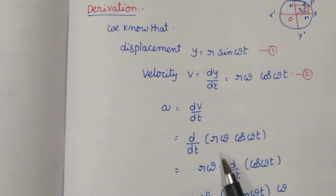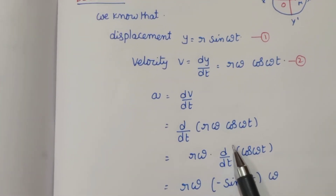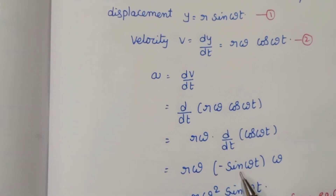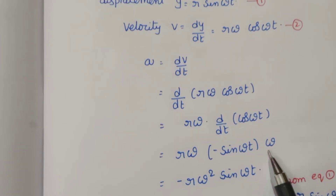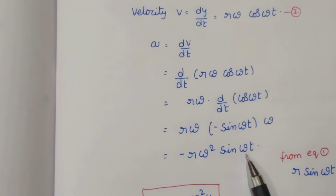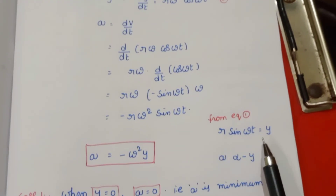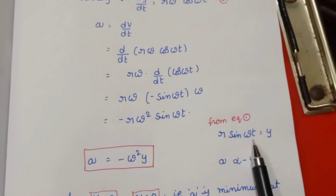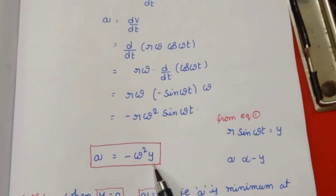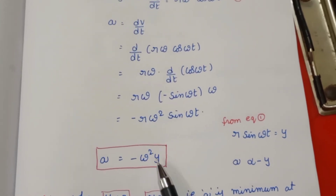Acceleration a = dv/dt = d/dt of r·ω·cos(ωt). Here r·ω is the constant value. Differentiating cos(ωt): d/dt of cos θ gives −sin θ, and differentiating ωt gives ω. So acceleration = −r·ω²·sin(ωt). From equation 1, y = r·sin(ωt), substituting gives acceleration a = −ω²·y.